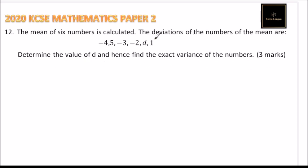Deviation means you subtract the number from the mean, and when you add up the deviations it should add up to zero. So sum of deviations is equals to zero.